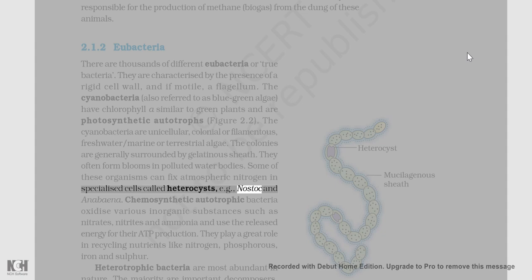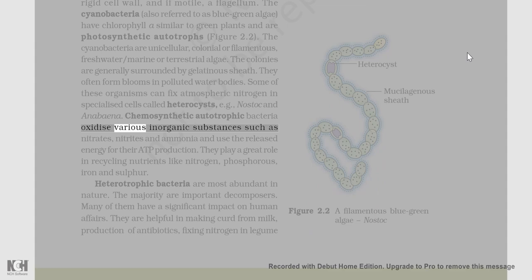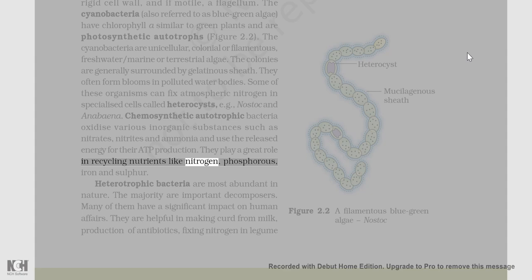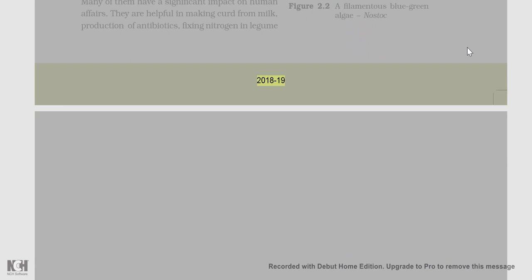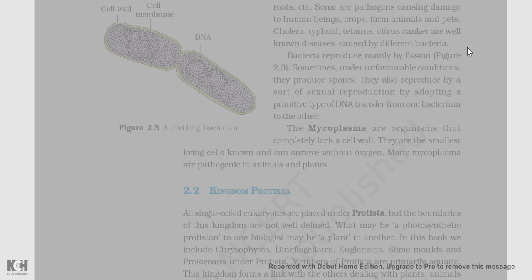Chemosynthetic autotrophic bacteria oxidize various inorganic substances such as nitrates, nitrites, and ammonia and use the released energy for their ATP production. They play a great role in recycling nutrients like nitrogen, phosphorus, iron, and sulfur. Heterotrophic bacteria are most abundant in nature; the majority are important decomposers. Many of them have a significant impact on human affairs — they are helpful in making curd from milk, production of antibiotics, fixing nitrogen in legume roots, etc.